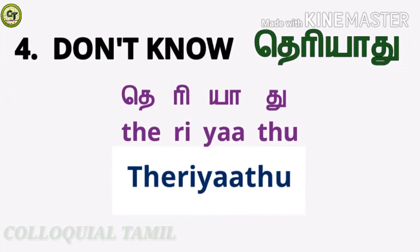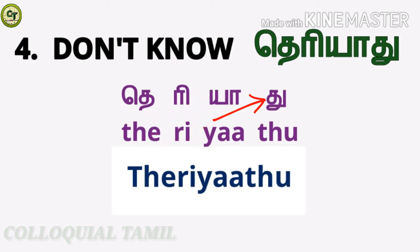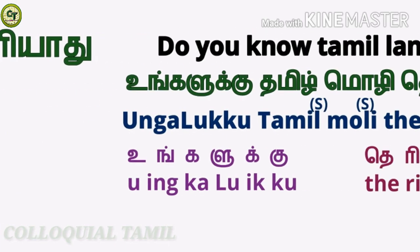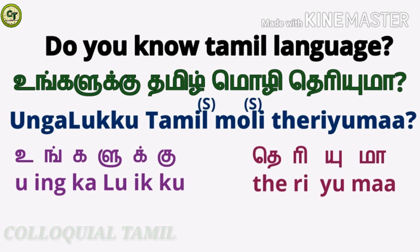Our fourth word is 'theriyadu', which means 'don't know.' You already know 'தெ' and 'ரி' from 'theriyum.' This is 'யா', a long sound letter — the time taken to pronounce it is twice that of a short sound letter. This is 'து', a short sound letter. Together, the word is 'theriyadu'.